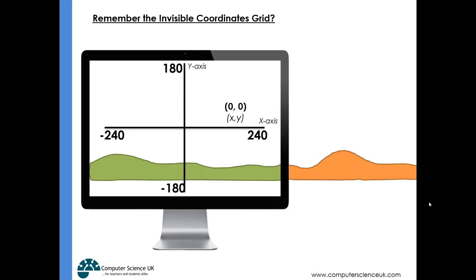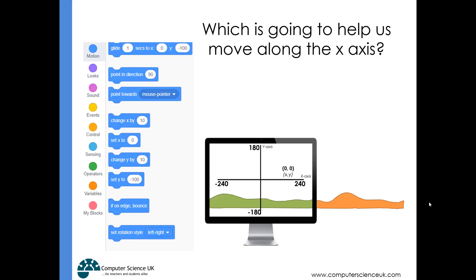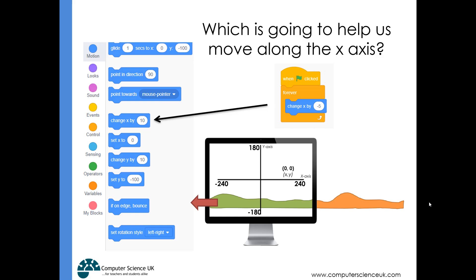Remember, you've got an invisible coordinates grid on the Scratch stage. To move objects to the left, we need to think about the x-axis — so it's the x coordinate that needs to change over time. We can use the 'change x by' block with a certain value. If we forever change the x value by minus five, the object will move to the left, its x value constantly going from, say, 100 to 99 to 98 to 97, all the way down to minus 240 where it would be off the screen.